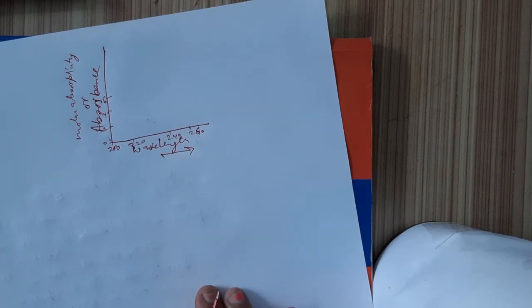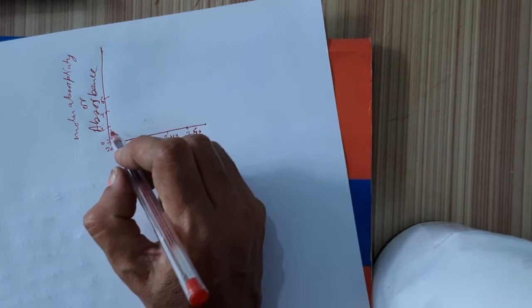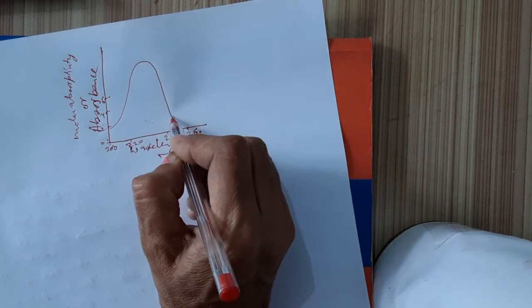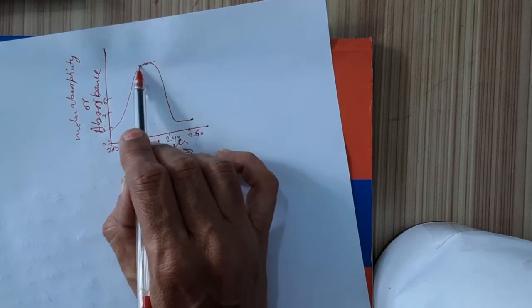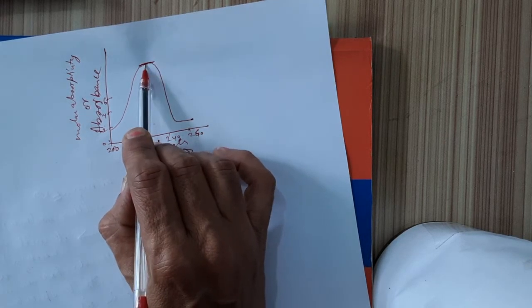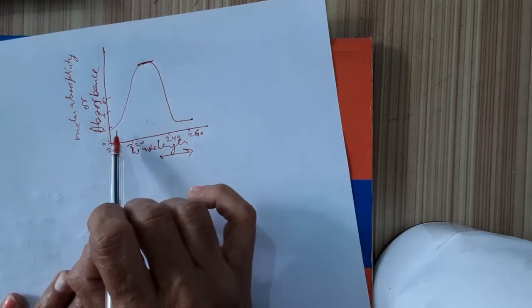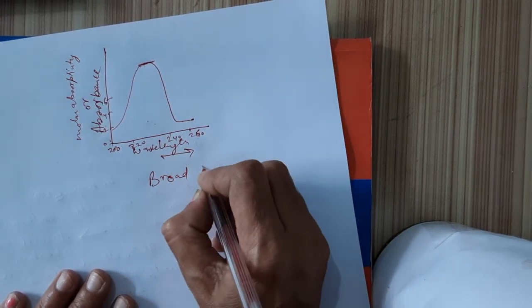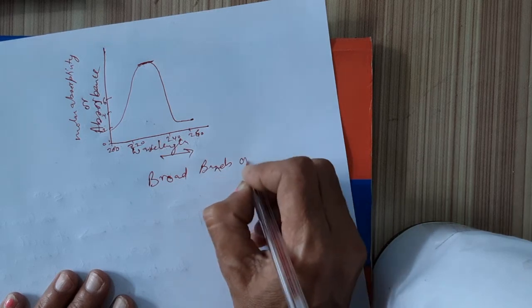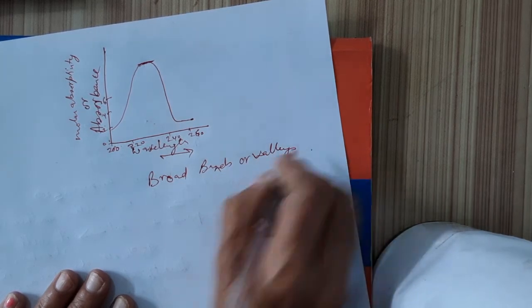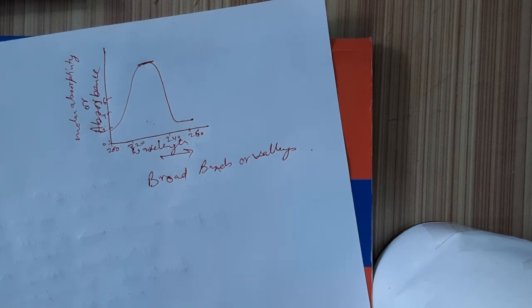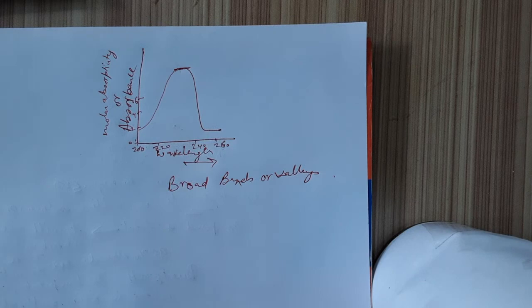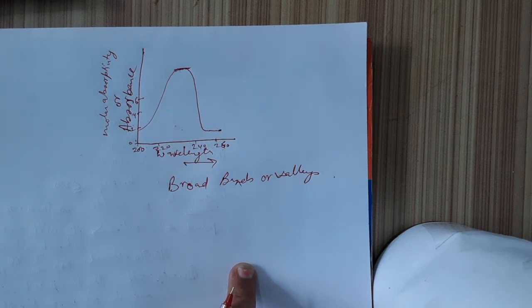After plotting, we get a spectrum depending on the material being studied. The portion where there is maximum absorption is called the lambda maximum. The UV spectra appear in the form of broad bands or valleys. This is how the UV spectra is recorded on the chart paper.